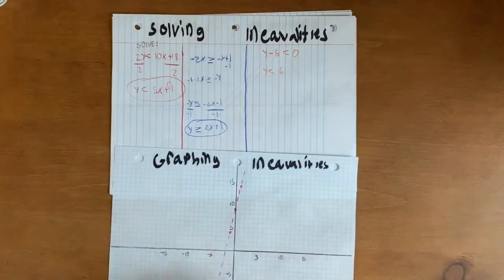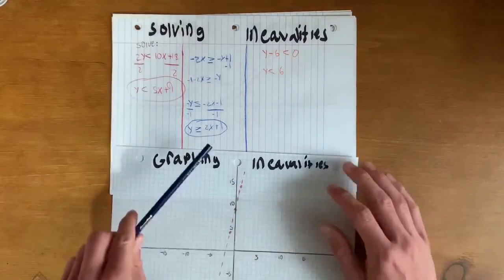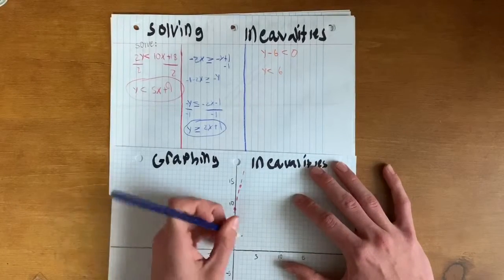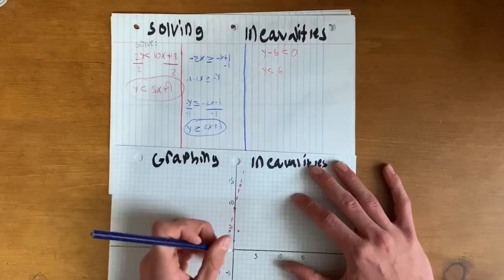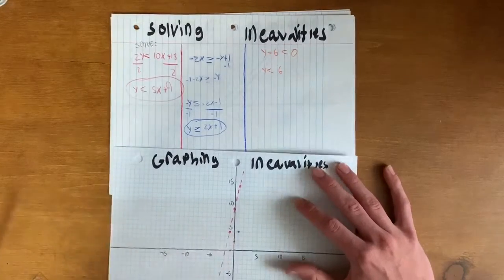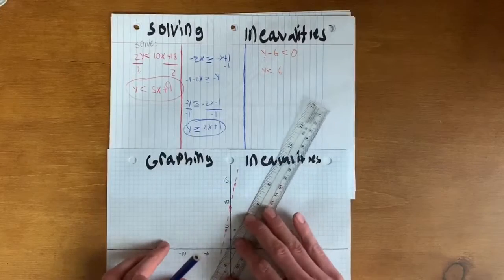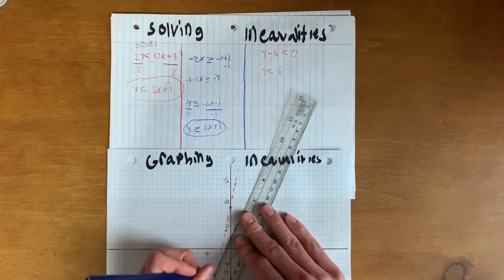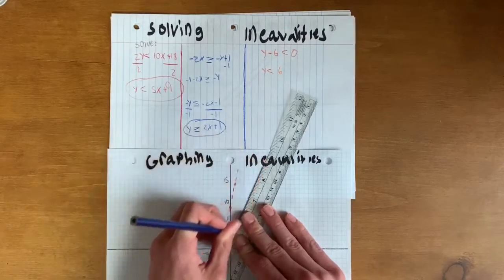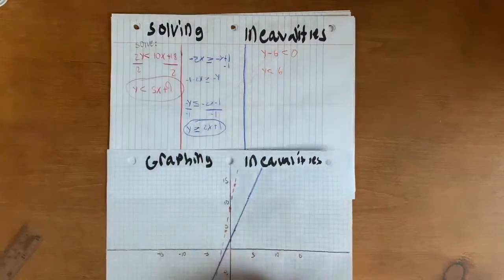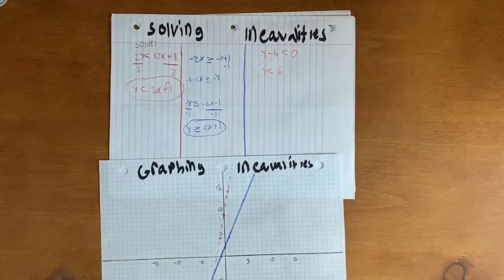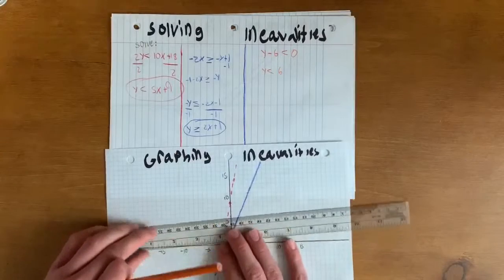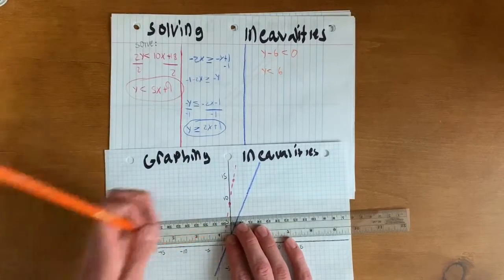For y ≥ 2x + 1, start at 1, go up 2 over 1 and down 2 over 1. This one needs to be a solid line because it can be equal to the line or anything greater than it. The final line is just a horizontal line at y = 6, which will be a dashed line because it is not equal to it.